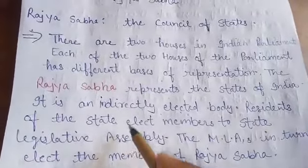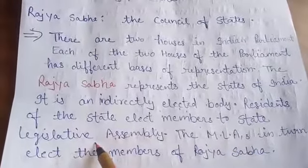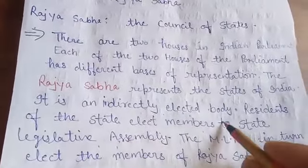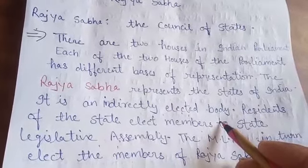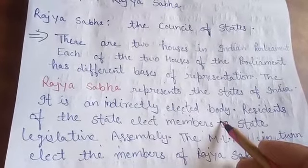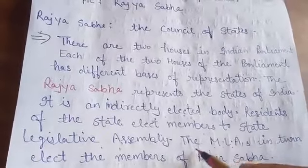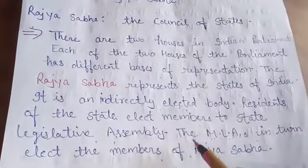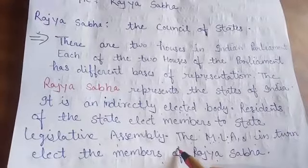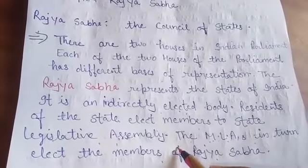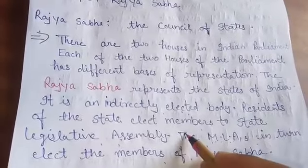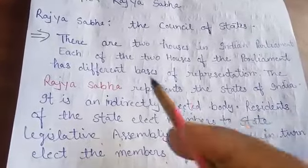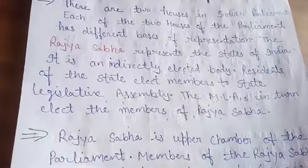The residents of the state elect the members of the State Legislative Assembly, or the members of Vidhan Sabha. The residents living in states vote for the MLA. MLA's full form is Member of Legislative Assembly. Then these MLAs in turn elect the members of Rajya Sabha. So the citizens of the state elect the MLAs, and then MLAs elect the members of Rajya Sabha. So it is an indirectly elected body.